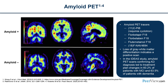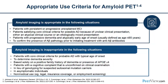On amyloid PET, the key distinction is between amyloid-positive and amyloid-negative individuals. Amyloid-negative scans show tracer uptake only in white matter — like a bare tree skeleton — while amyloid-positive scans show tracer extending to the cortical surface, like a tree in full leaf. Most clinically used tracers are F18 compounds; the C11 compound PIB requires an on-site cyclotron and is largely reserved for research.